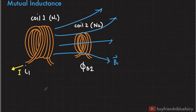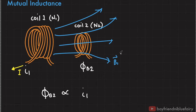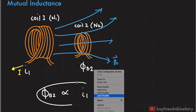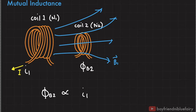The magnetic flux experienced by coil 2 is directly proportional to the magnetic field vector and its area, and we know that the magnetic field vector is directly proportional to the strength of the current. So essentially the magnetic flux experienced by coil 2 is directly proportional to the strength of the current of coil 1. This relationship holds if we assume that coil 2 has N_sub_2 equals 1, meaning the number of turns in coil 2 is just equal to 1 — a single loop.